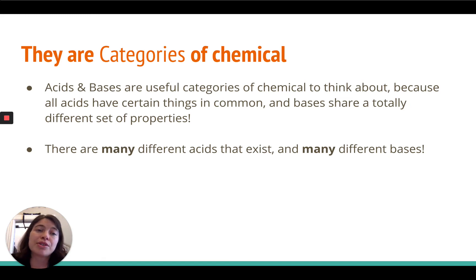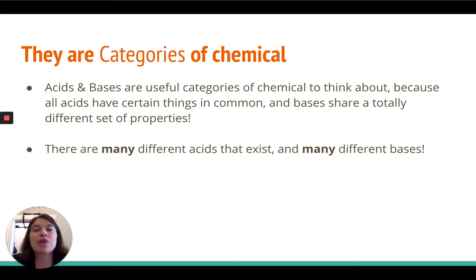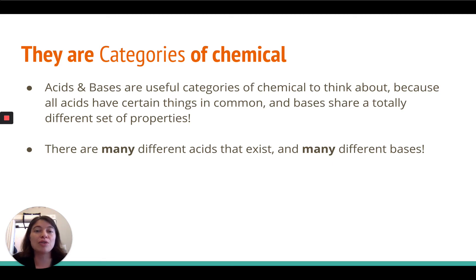The first thing to understand about acids and bases is that these are broad categories of chemical. There are lots of different things that are acids, and lots of different things that are bases. You might have heard of hydrochloric or hydrofluoric acid, or a base like sodium hydroxide. This is a useful category because all acids tend to share a certain set of properties — if you know that something is an acid, you already know a lot about it. Likewise, all bases share a different set of chemical properties.